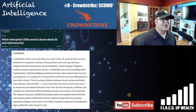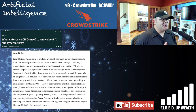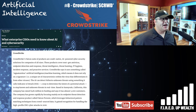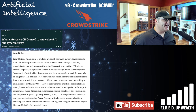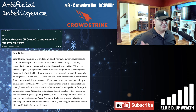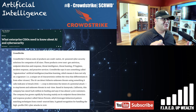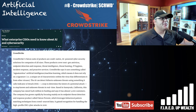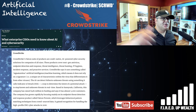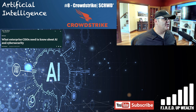The company has grown rapidly by focusing on its endpoint threat detection and response product called Falcon Prevent, which leverages behavioral pattern matching techniques from crowdsourced data. It gained recognition for handling the high-profile DNC cyberattacks in 2016. As for the rankings, don't pay too much attention to the numbers — it's very hard to determine the exact order for stocks in the middle of the list.